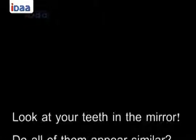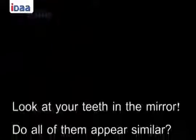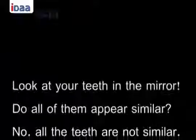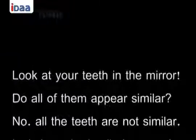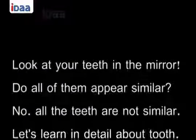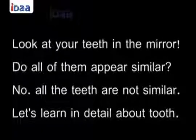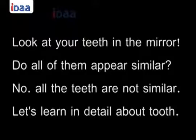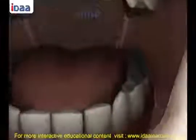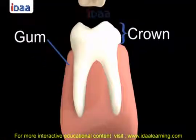Look at your teeth in the mirror — do all of them appear similar? No, all the teeth are not similar. Let's learn in detail about the structure of a tooth. Every tooth is embedded in a socket called the gum, and the crown is the visible part of the tooth above the gum.